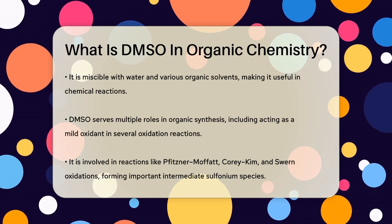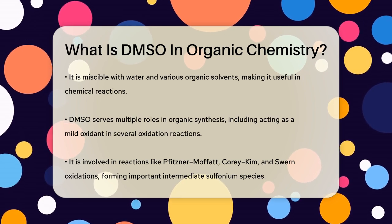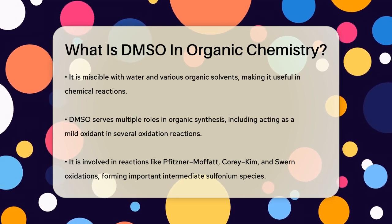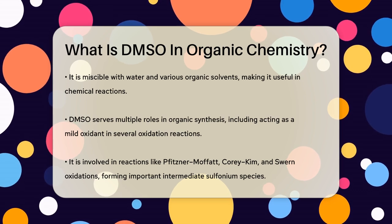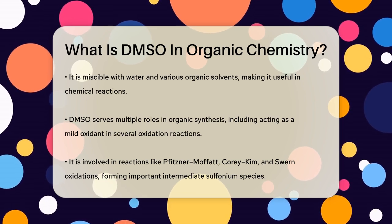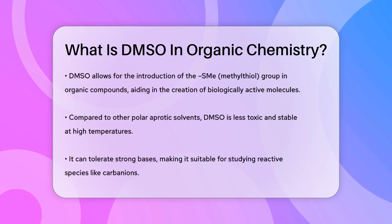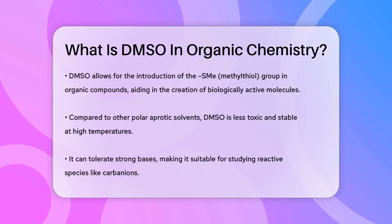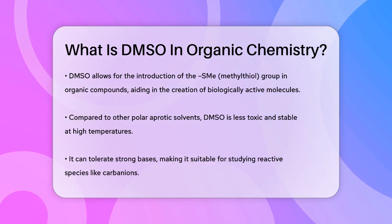These reactions involve the formation of intermediate sulfonium species, which are crucial for various organic transformations. DMSO is also known for its use in introducing the methylthiol functionality in organic molecules. This is particularly important in creating biologically active compounds, as it provides a way to add sulfur groups to molecules in a controlled manner.